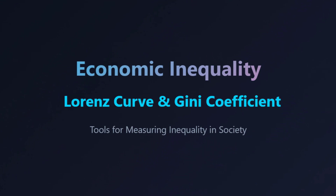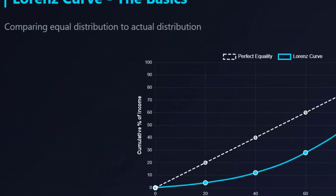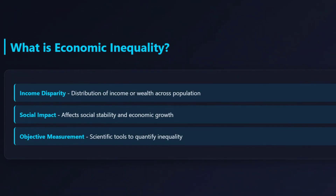That's exactly what we're going to dig into. It sounds almost impossible — how do you translate this feeling we have about fairness into a concrete image? It turns out economists came up with a surprisingly elegant tool to create a visual snapshot of how income is spread across an entire country. That tool is called the Lorenz Curve — our starting point for giving that vague idea of inequality a real, visible shape.